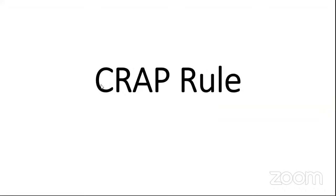So what is the CRAP rule all about? It's an acronym. C stands for Contrast, R for Repetition, A for Alignment, and P for Proximity. Let's discuss each of them one by one.